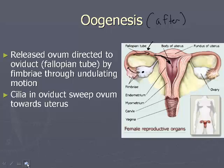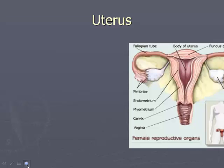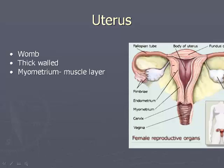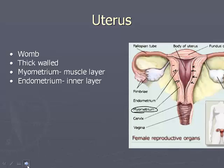Speaking of the uterus — this is the womb, where the embryo or fetus will develop. It is very thick-walled for a reason. The thick-walled part is called the myometrium — 'myo' essentially means muscle layer — and during birth and menstruation the uterus contracts, and that's what's doing the contracting. The most important part for us is the endometrium, the inner layer. This is where the endometrium builds up and is eventually shed during menstruation.